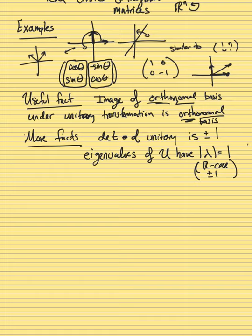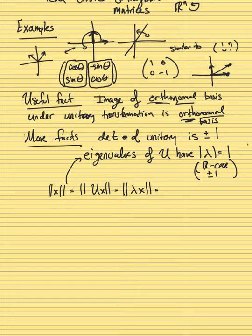Some more useful facts: as you might guess, since orthonormal bases map to orthonormal bases, the determinant of a unitary transformation is ±1. Also, the eigenvalues of a unitary matrix U have norm 1, i.e., |λ| = 1. To see this: if U(x) = λx, then the norm of U(x) equals the norm of x by isometry, but also equals |λ| times the norm of x. Therefore |λ| = 1. In the real case this gives ±1; in the complex case eigenvalues lie on the unit circle, of the form e^{iθ}.